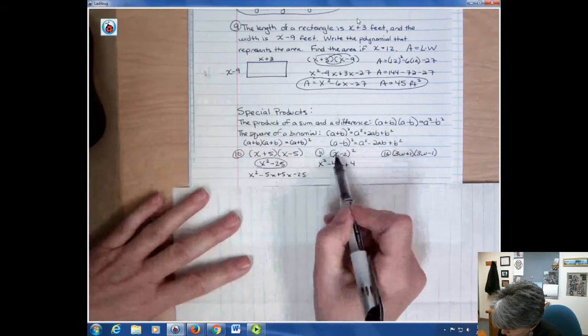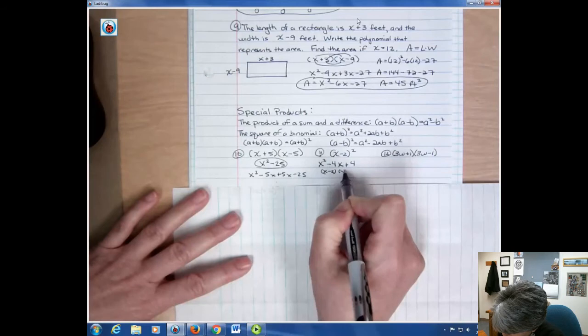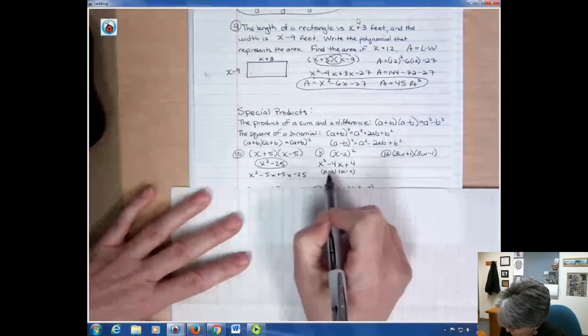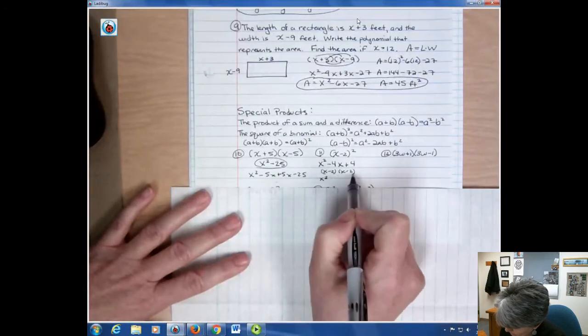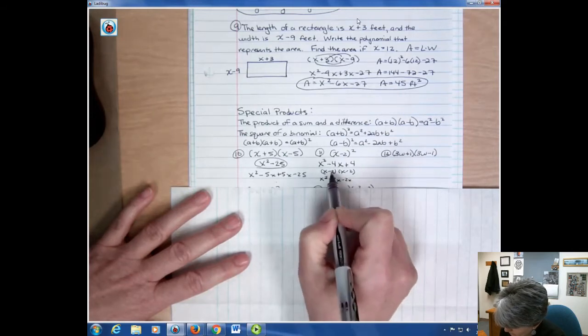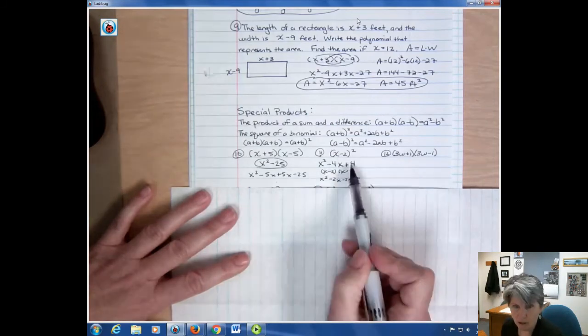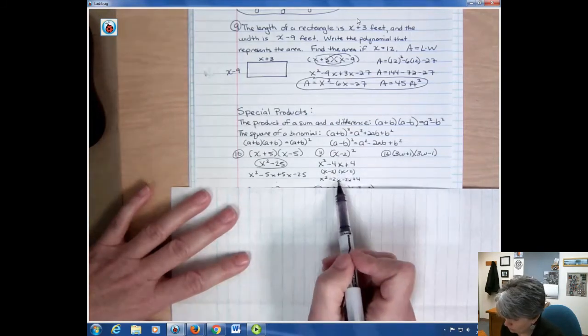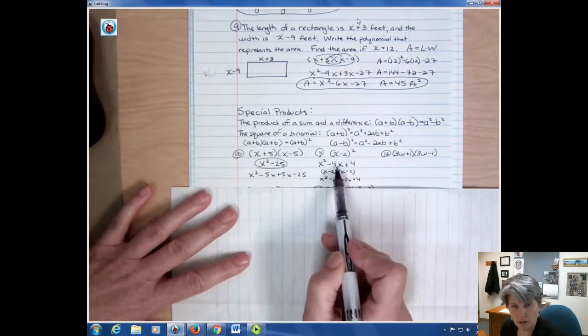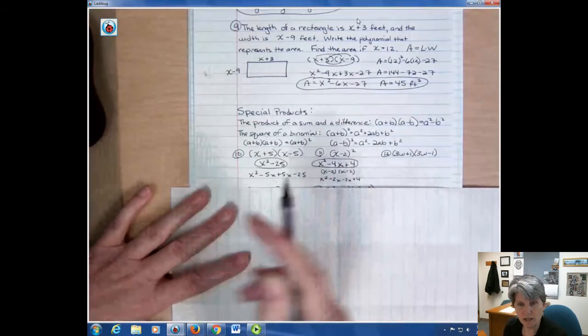What would the FOIL look like? Well, the FOIL would be x minus 2 times x minus 2. The first term, x times x is x squared, then minus 2x outside, then minus 2x inside, and then plus 4. What happened here? Well, we have our x squared, we can see that. We have our plus 4, we can see that. But I had minus 2 repeated twice. Minus 2 and minus 2 is minus 4. So that's the shortcut. Why the shortcut works is because you're going to get that same term twice. So you can just double it.